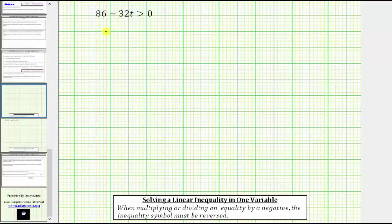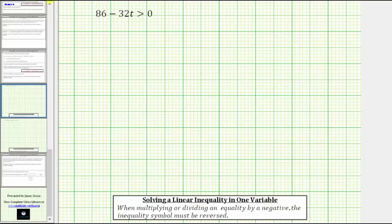Remember, when solving an inequality, if we multiply or divide both sides by a negative, we must reverse the inequality symbol. The first step is to isolate the variable term by undoing the positive 86. We undo 86 by subtracting 86 on both sides of the inequality. Simplifying, this difference is zero, and now we have negative 32t is greater than negative 86. Because negative 32t means negative 32 times t, to undo the multiplication and solve for t, we now divide both sides by negative 32. But because we are dividing both sides by a negative, we need to reverse the inequality symbol.